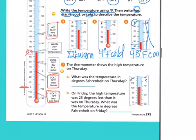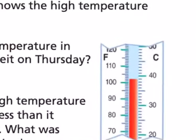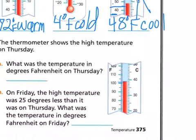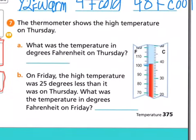Number seven: the thermometer shows the high temperature on Thursday. What was the temperature in degrees Fahrenheit on Thursday? So if you look really carefully, it's not at 100. You have to count those little tiny marks. I don't know if I can do that with my stylus here, but there's one mark and it's more right up to here, so that looks like it's two little spots above the 100, for 102 degrees Fahrenheit.